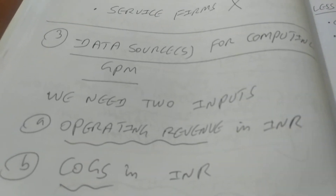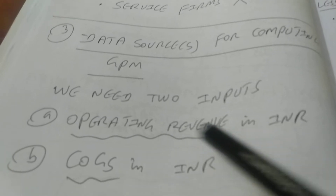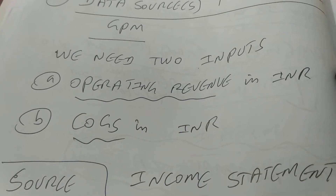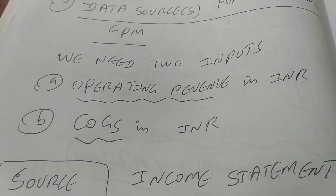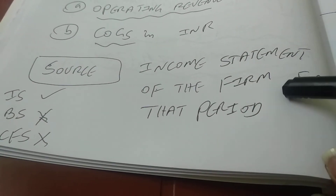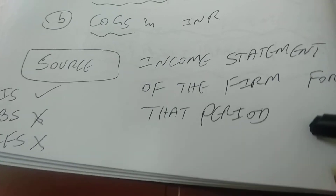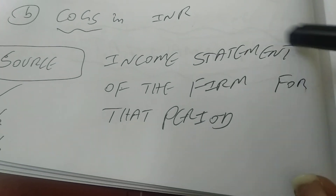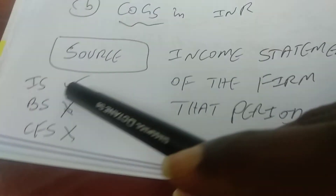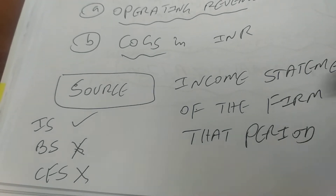Where can we get the data for GPM? We need basically two inputs: input number one is operating revenue in INR, and input number two is cost of goods sold in INR. We can get both inputs from the income statement of the company for that particular period — whether it is a year, a quarter, six months, or nine months. So we only need to look at the income statement; we don't need the balance sheet or the cash flow statement to find GPM.